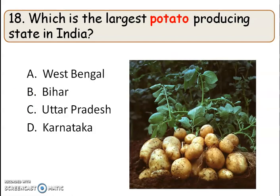Which is the largest potato producing state in India? The right answer is option C, Uttar Pradesh. Potato is also a rabi crop, and Uttar Pradesh is the largest potato producing state, with West Bengal in second position.